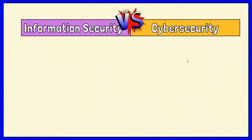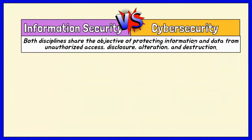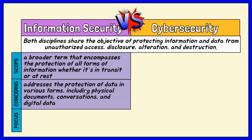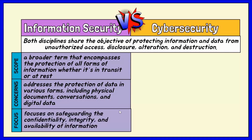Nearly all measures linked to cybersecurity intersect with information security to varying degrees. Both disciplines share the objective of protecting information and data from unauthorized access, disclosure, alteration, and destruction. While the terms information security and cybersecurity are often used interchangeably, a more precise understanding reveals distinctions in scope, concerns, and focus. Information security is a broader term that encompasses the protection of all forms of information, both electronic and non-electronic, regardless of whether it's in transit or at rest. It addresses the protection of data in various forms, including physical documents, conversations, and digital data, focusing on safeguarding confidentiality, integrity, and availability.